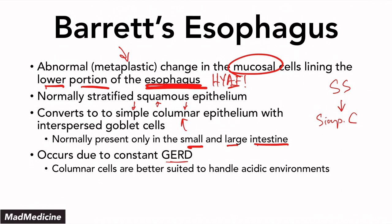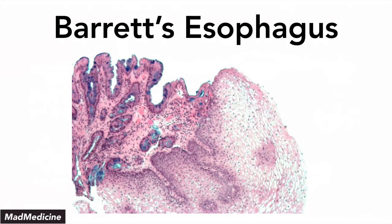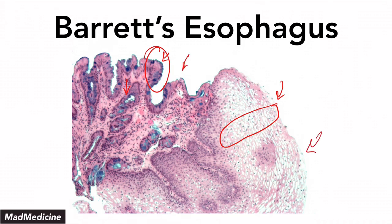Barrett's esophagus is a precursor lesion that can progress to esophageal carcinoma, specifically adenocarcinoma — making it a precancerous lesion. This photo of Barrett's esophagus shows stratified squamous epithelium on one side and simple columnar epithelium with goblet cells on the other — an abnormal esophagus resembling intestinal lining. Study this photo until you commit it to memory for exams.